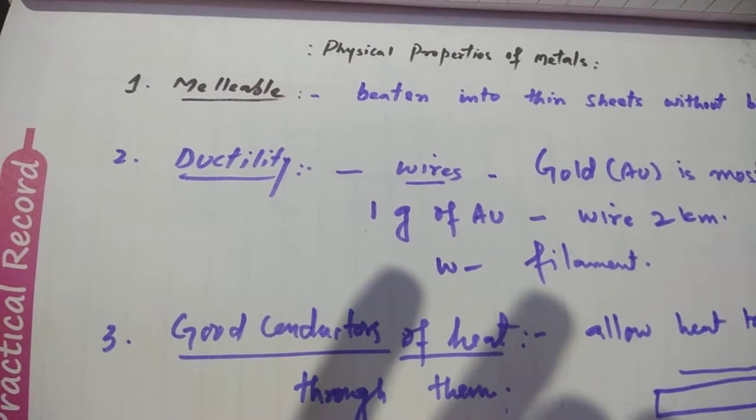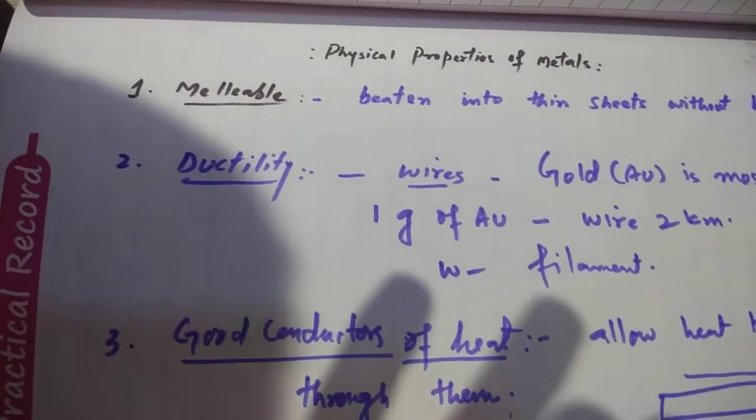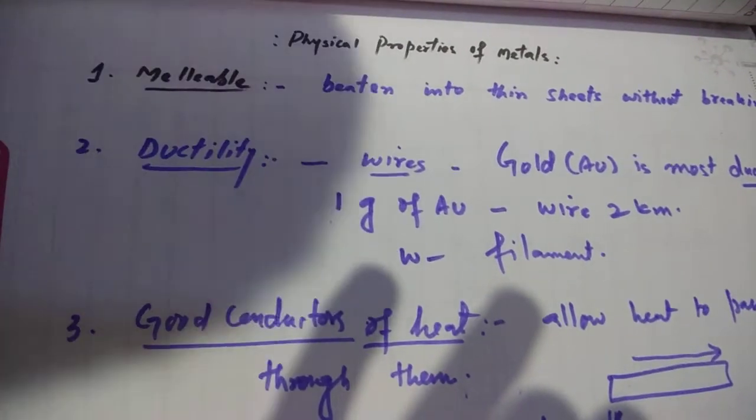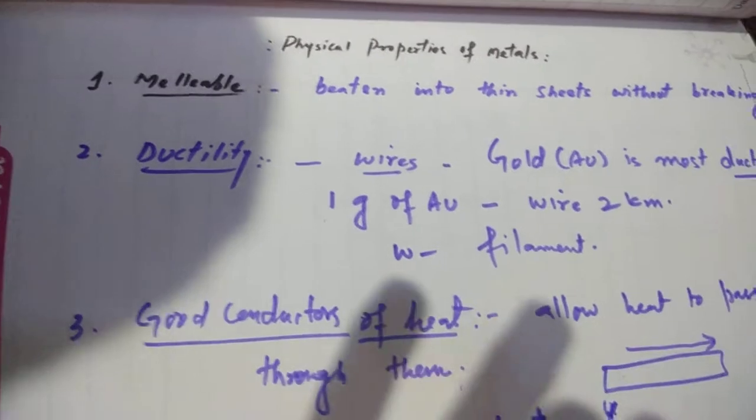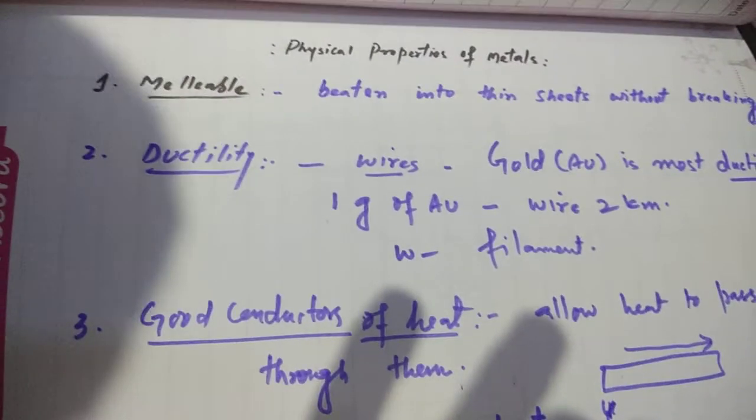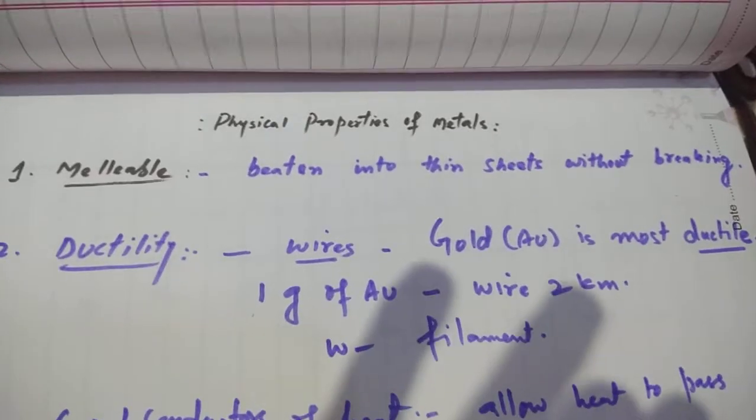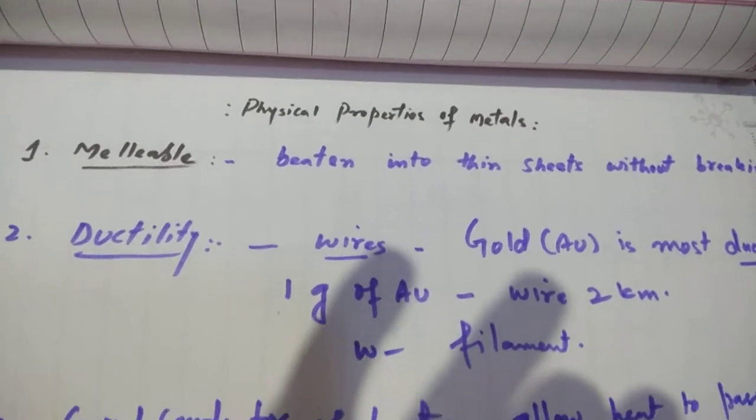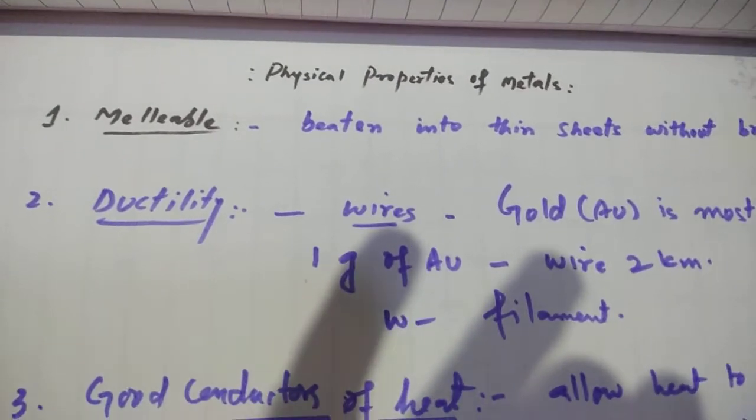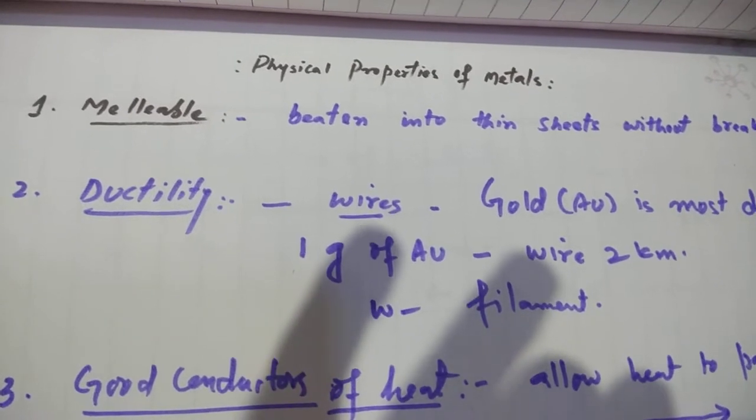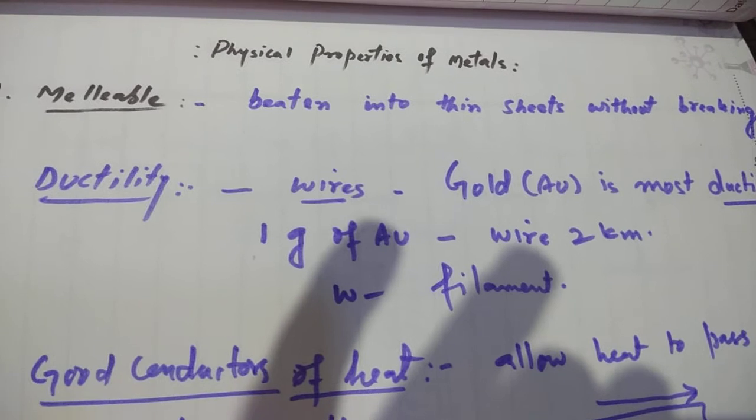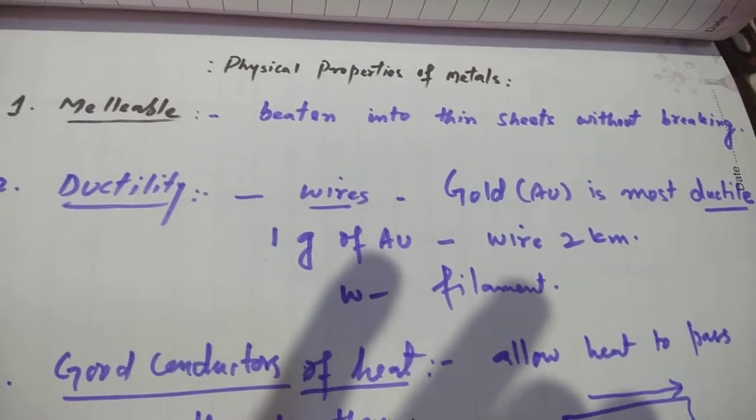Metals are malleable, we can draw them into thin sheets without breaking them. If we beat them using a hammer, they change into thin sheets. This property of the metal by which we can change them into thin sheets is called as malleability.